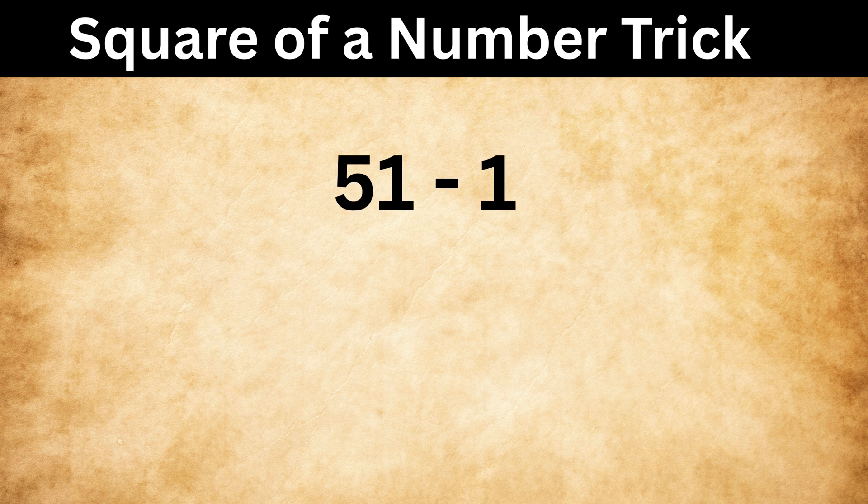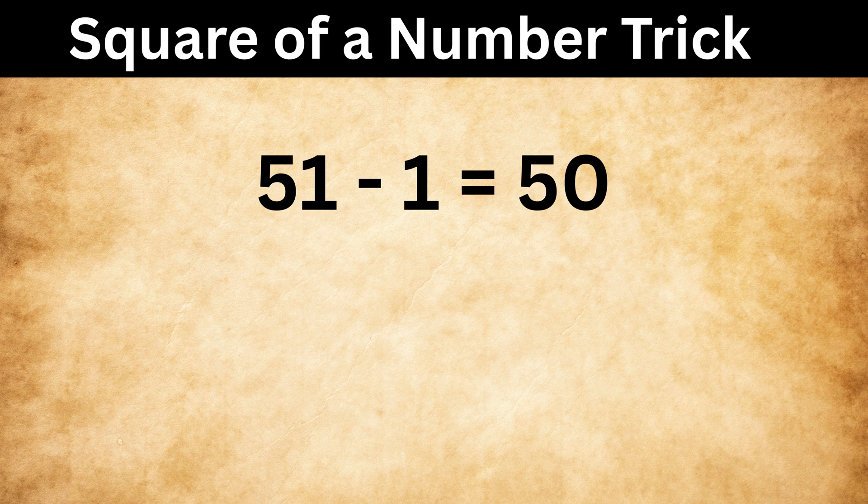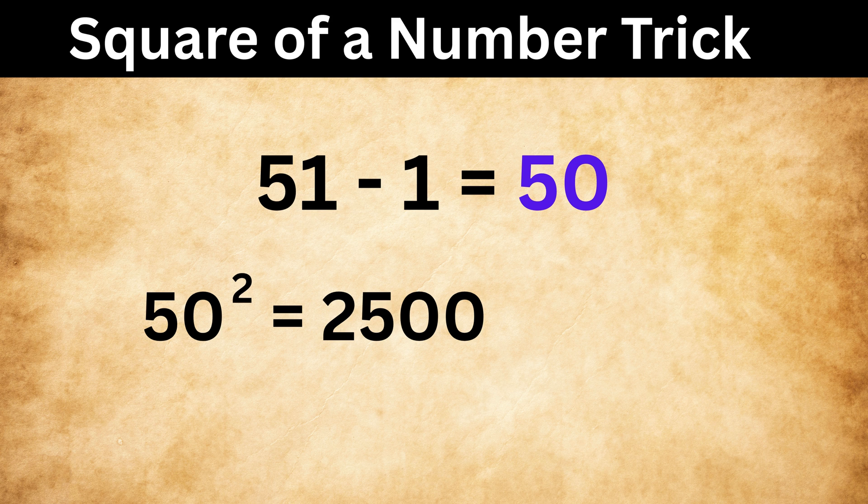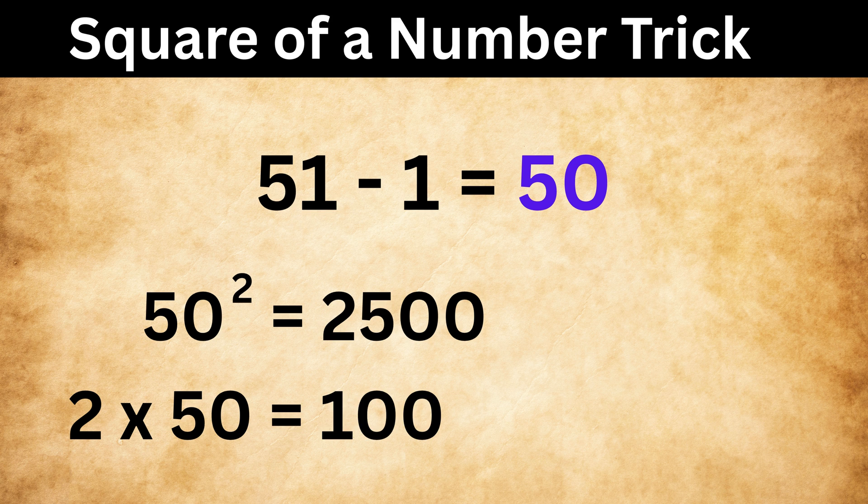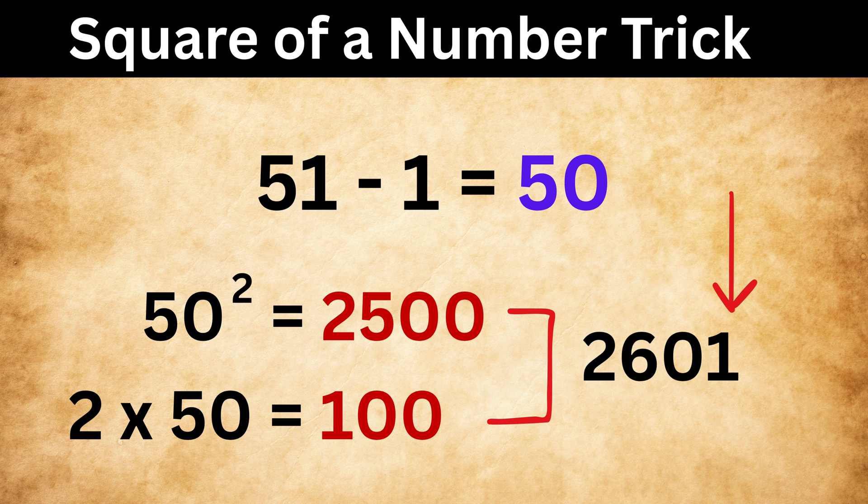The first step is to subtract 1 from this number, and we get 50 for this case. Then we will just square this number, as it is super easy to do so. We get 2,500. Now multiply this 50 by 2, and we get 100. Now simply add both of them to get 2,500 plus 100, or 2,600. Then just add one to it to get 2,601, and that's it. 51 square is this value.